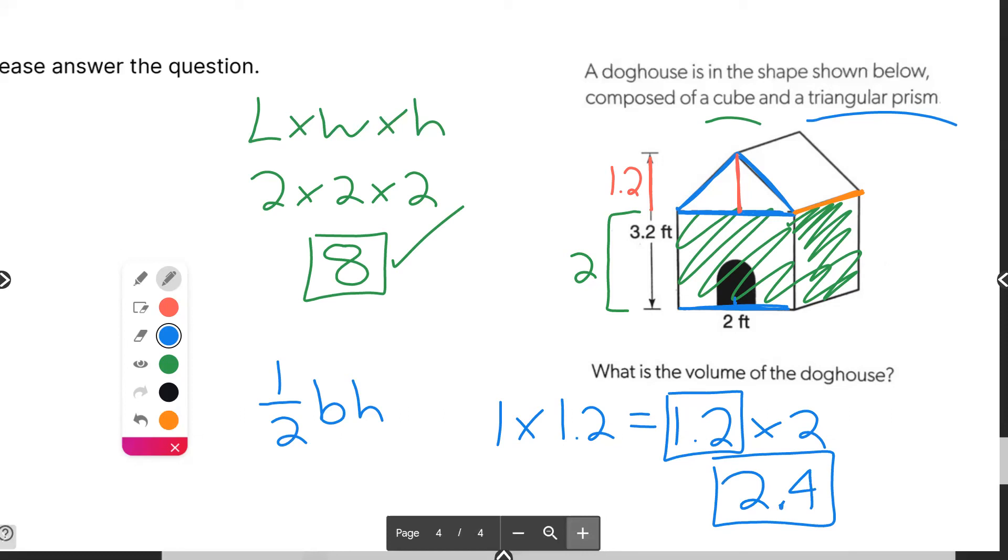Yes, that is exactly right. If you take the length 2 times the width 2 times the height 1.2 and then take half of that, you still get 2.4.